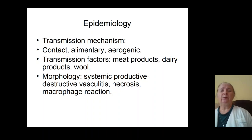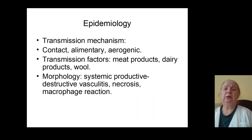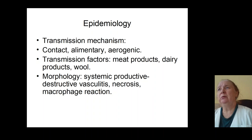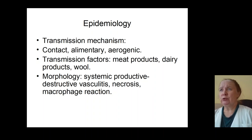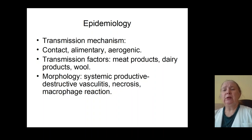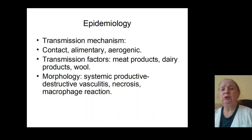The morphological substrate of Brucella is systemic productive destruction: vasculitis, formation of infection granulomas in different organs, formation of phagocytes and macrophages around the infection agent, necrosis of infection granulomas, and formation of visceral destruction and polyorganic insufficiency.